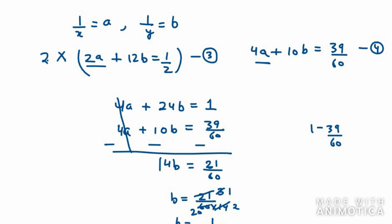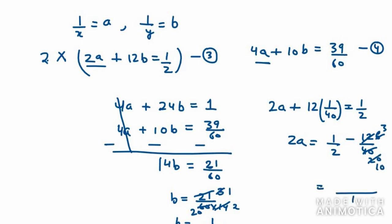Now we need to find the value of a. So I will use equation number 3 to find the value of a. So it is 2a plus 12b equals half. Now we get the value of 2a. 2a equals half minus 12 over 40. Now we can reduce 12 over 40 as 3 over 10. So we need to take LCM, it will be times 5 for the first term. So 5 minus 3 over 10. So it will be a equals 2 over 10 divided by 2. 2 and 2 gets cancelled out and we get the value of a as 1 over 10.